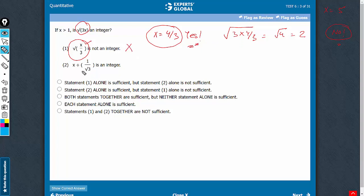Look at statement 2 now. This can be written as x√3. Now, we know that x√3 is an integer. We have to find whether √(3x) is an integer.